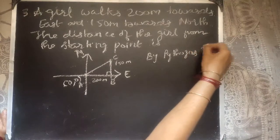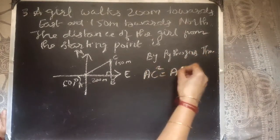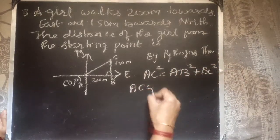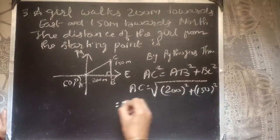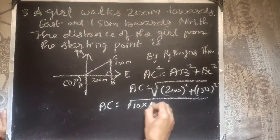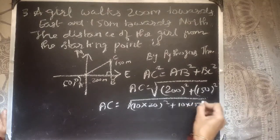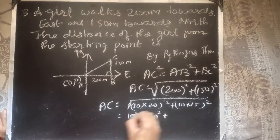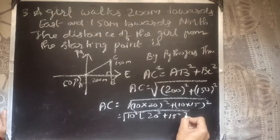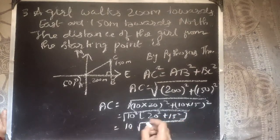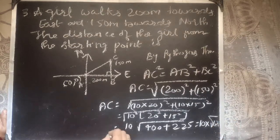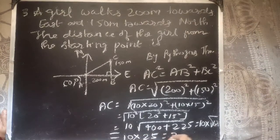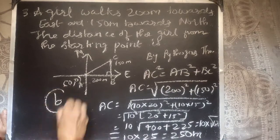By Pythagoras theorem, AC² = AB² + BC². So AC = √(200² + 150²). Taking 10 out: AC = 10 × √(20² + 15²) = 10 × √(400 + 225) = 10 × √625 = 10 × 25 = 250 meters. So option B is the correct answer.